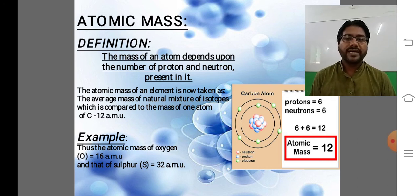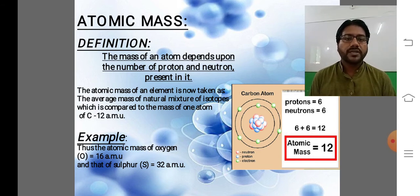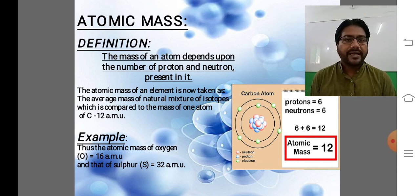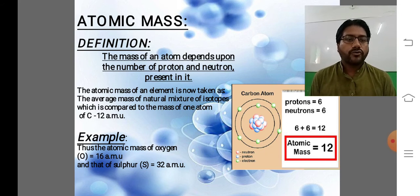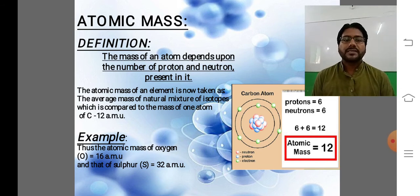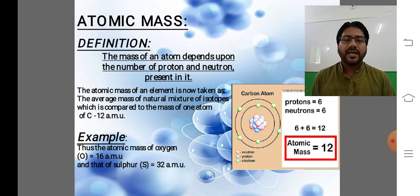Atomic mass of an element is taken as the average mass of a natural mixture of isotopes, compared to the mass of one atom of carbon-12 atomic mass unit. Looking at the diagram, carbon atomic weight is 12 and atomic number is 6, so the nucleus has 6 protons and 6 neutrons. So 6 plus 6 gives us atomic weight 12 — this is the atomic mass unit.